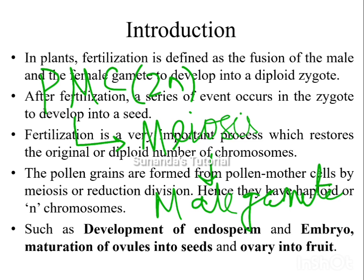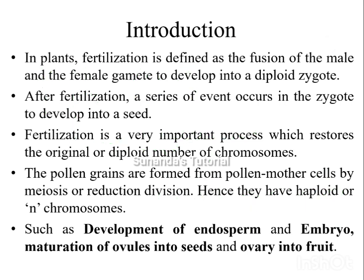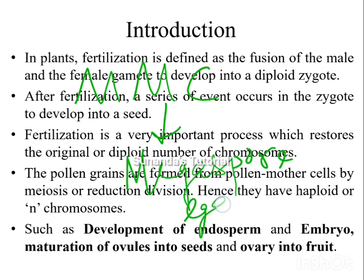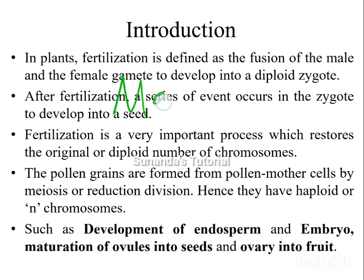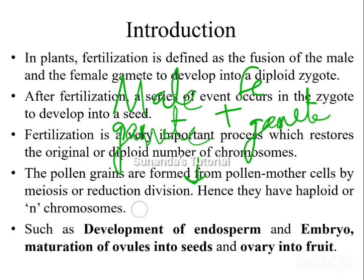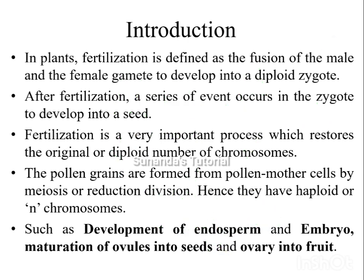Female gametes are formed by meiosis in the megaspore mother cell. The megaspore mother cell undergoes meiosis to form megaspores or egg cells, which are haploid in nature. In this way two haploid gametes are formed, and finally the male gamete fuses with the female gamete to form a diploid zygote. After fertilization, a series of events occur: development of endosperm, development of embryo from the zygote, formation of seeds from the ovule, and transformation of the ovary into a fruit.